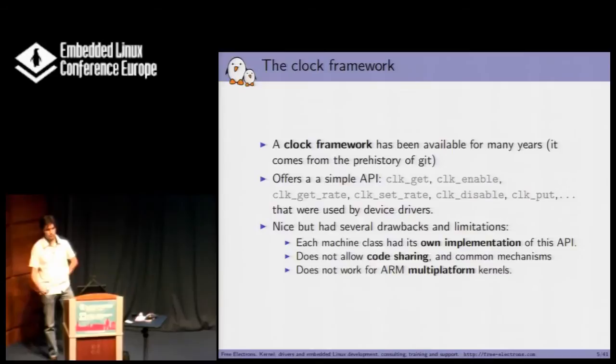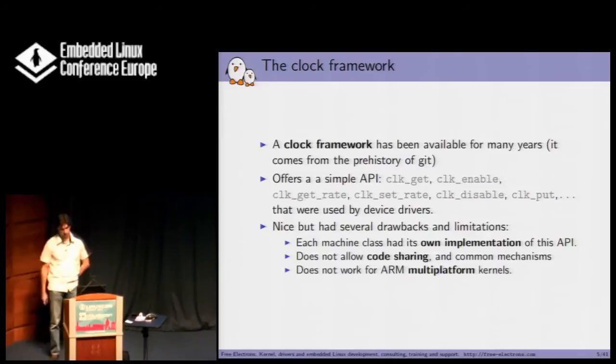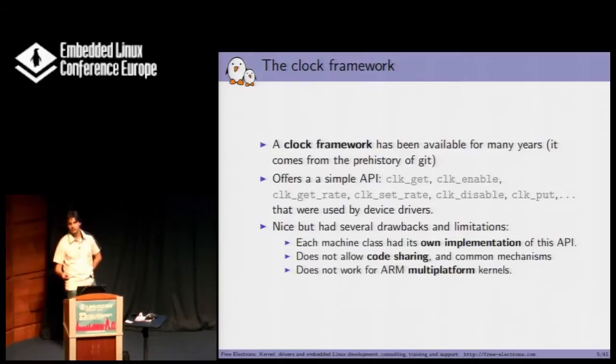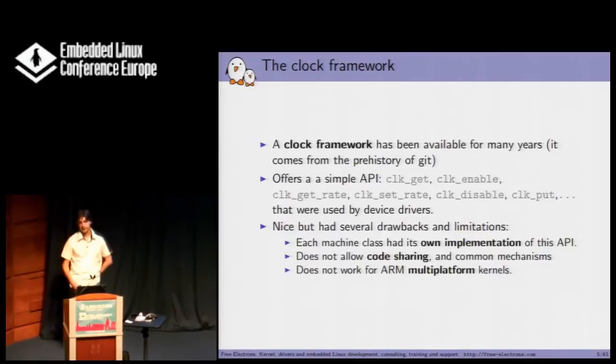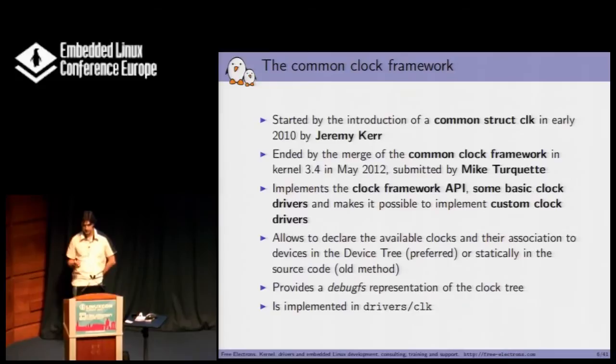The clock framework has been available for many years — when I did some research, it came from the prehistory of Git, so it's pretty old. It offers a simple API: clk_get, clk_enable, and so on, which is used by device drivers. But it has several drawbacks and limitations. Each machine class has its own implementation, which doesn't allow code sharing, and it also doesn't work for a multi-platform kernel.